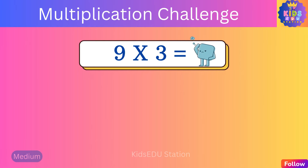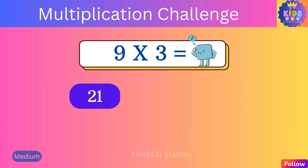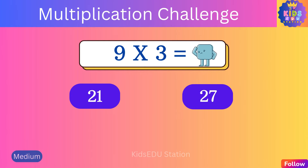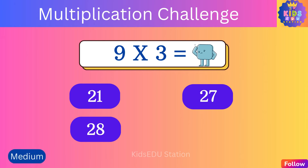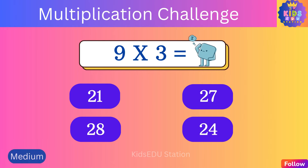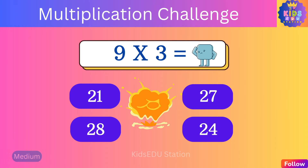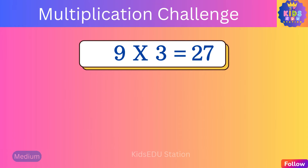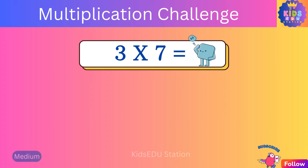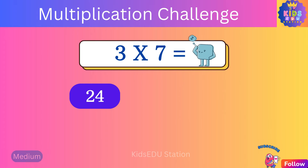What is nine times three? Twenty-one, twenty-seven, twenty-eight, twenty-four. Nine times three is twenty-seven. What is three times seven?